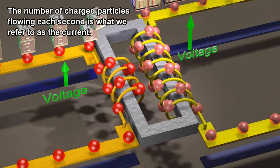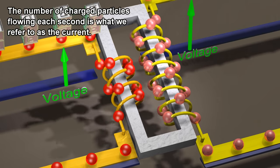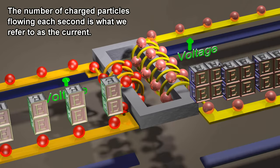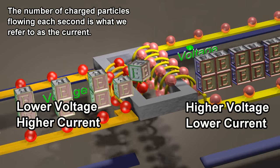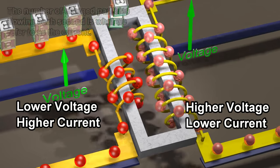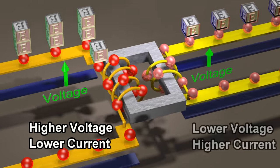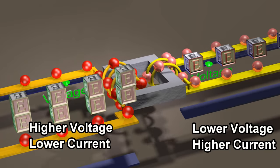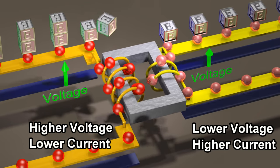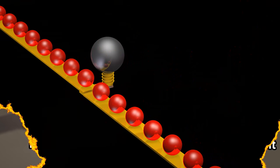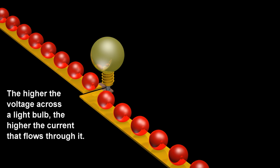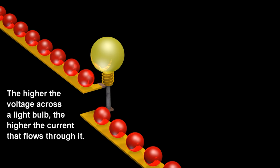The number of charged particles flowing each second is what we refer to as the current. The higher the voltage across a light bulb, the higher the current that flows through it.